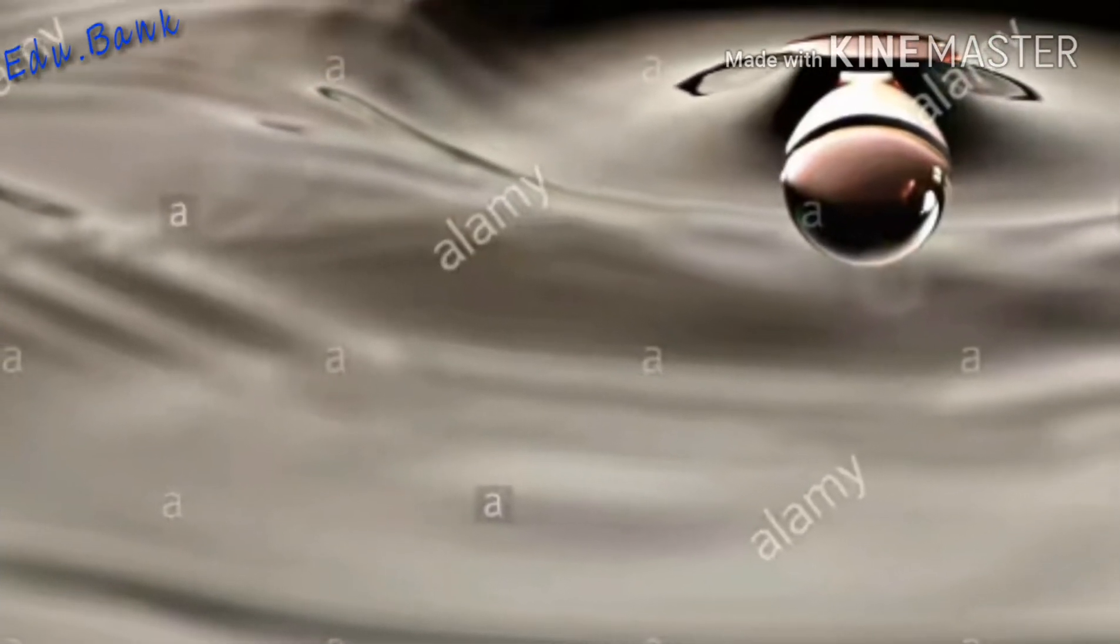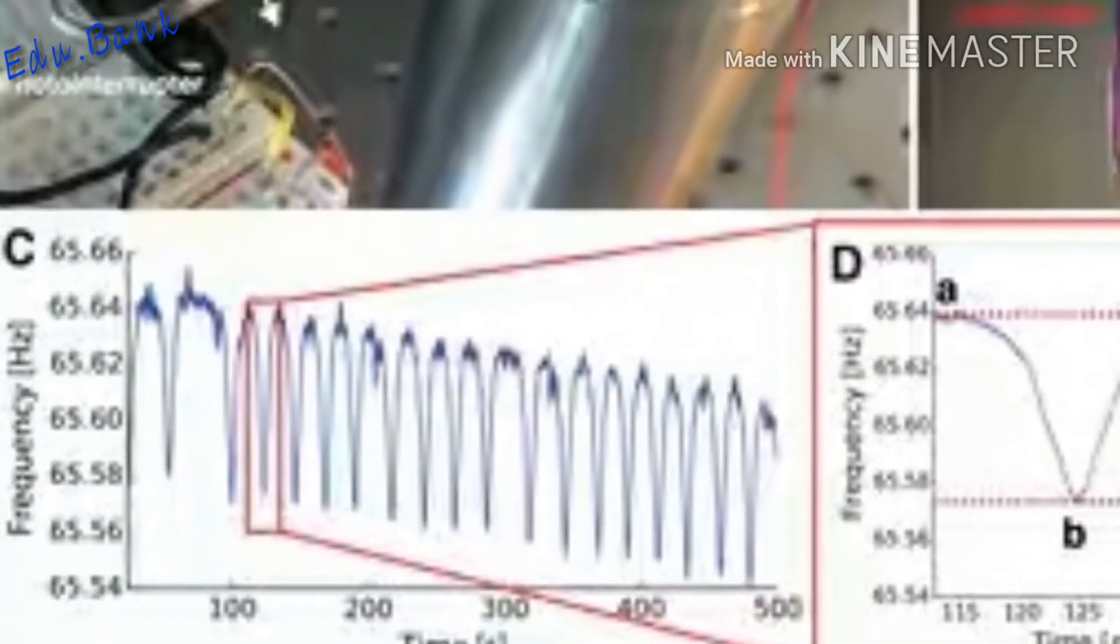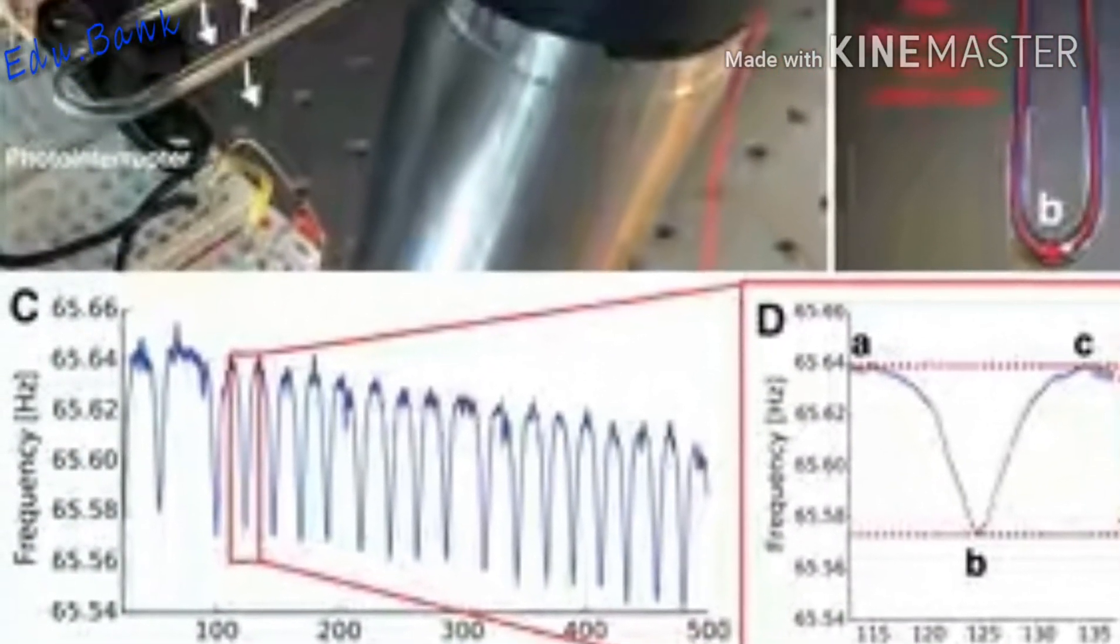That's what most things that we're used to do, said Michael Forbes, a WSU assistant professor of physics and astronomy and an affiliate assistant professor at the University of Washington. With negative mass, if you push something, it accelerates toward you.